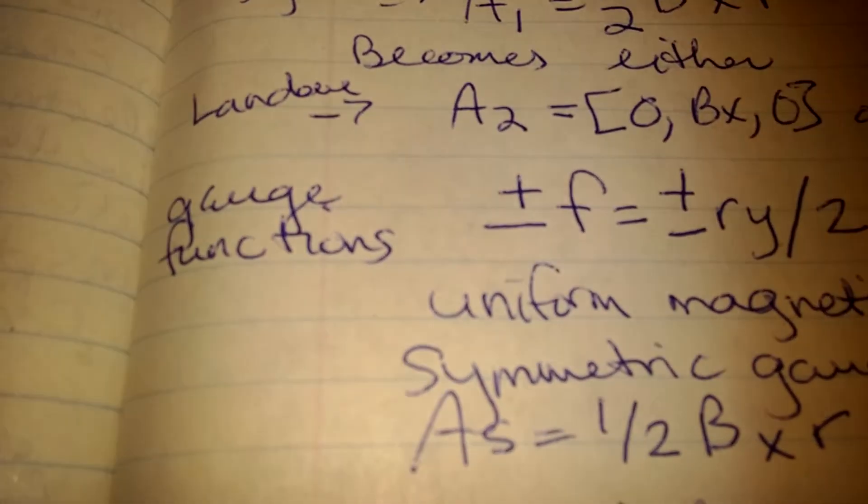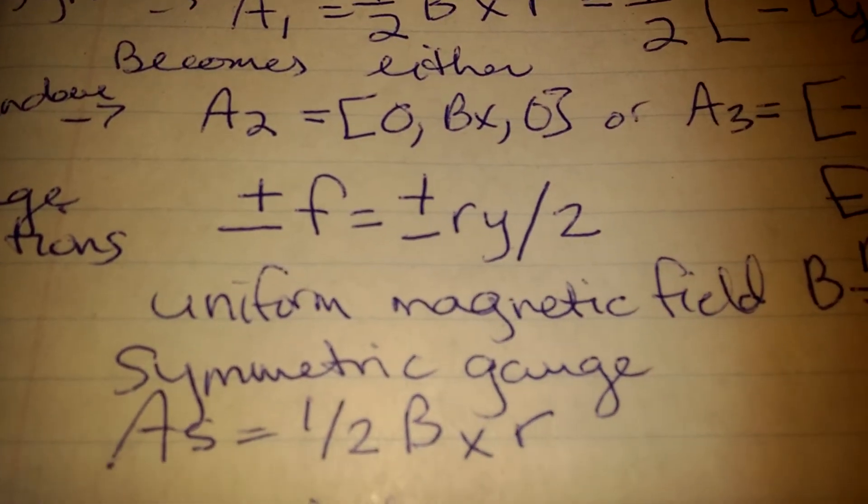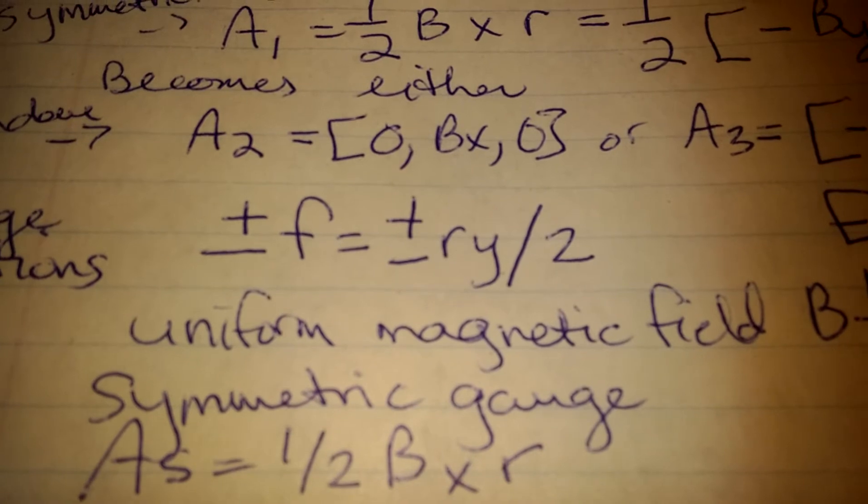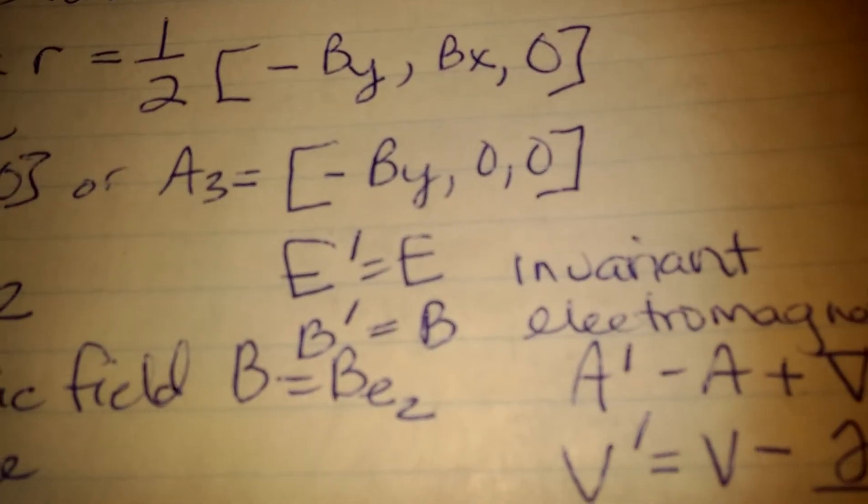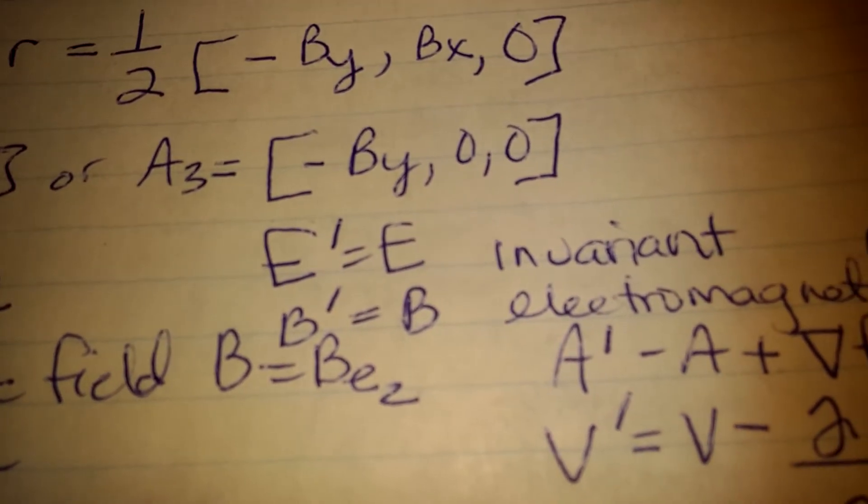Gauge functions are plus minus f equals plus minus by divided by 2, and e1 equals e, b1 equals b.